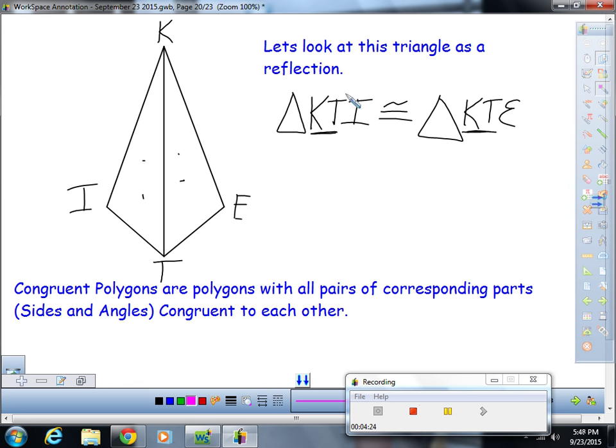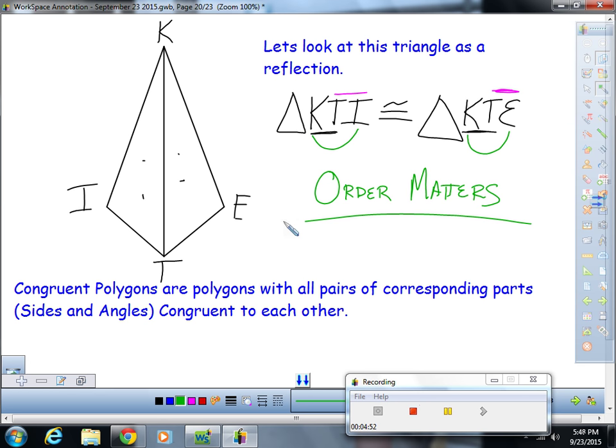Segment TI, is that congruent to segment TE? Since it's a reflection, then yes, indeed it is. And then segment KI, is that congruent to segment KE? Yes, it is. So this is one of the most important parts of this simple little lesson. Order matters. You've got to write the corresponding parts in the same order for each set of congruent parts.